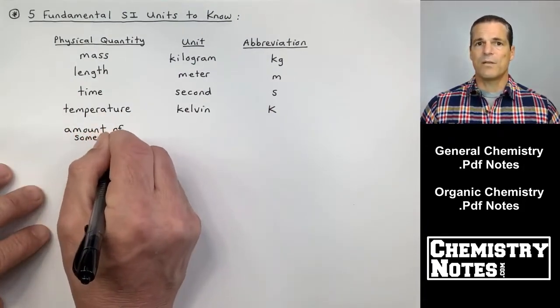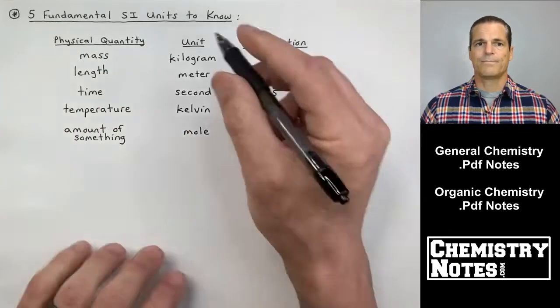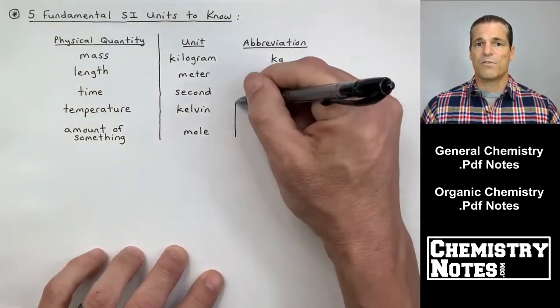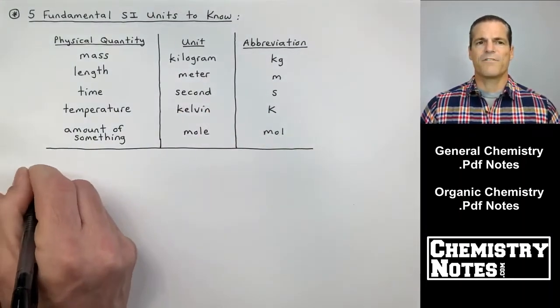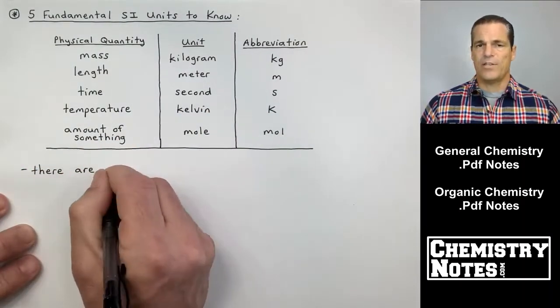The amount of something, we'll learn a lot about the mole later on. And the abbreviation for the mole is only one letter short, MOL. Those are the five fundamental SI units to know.